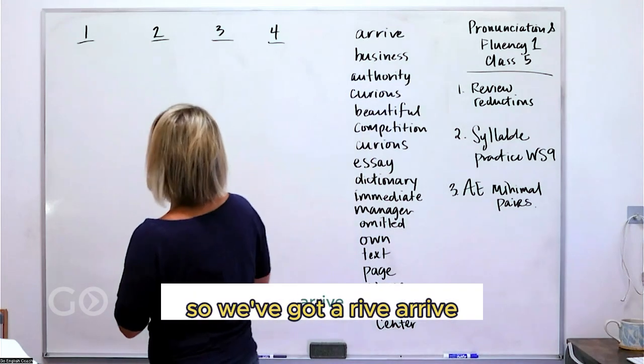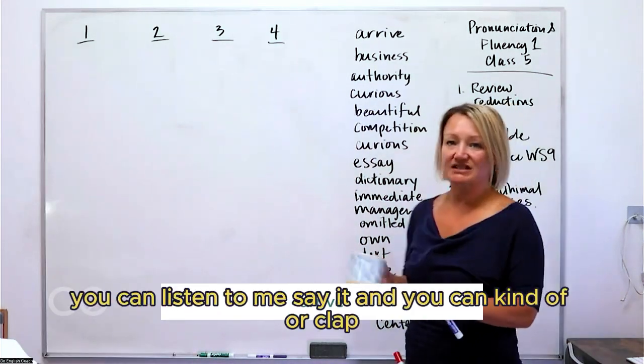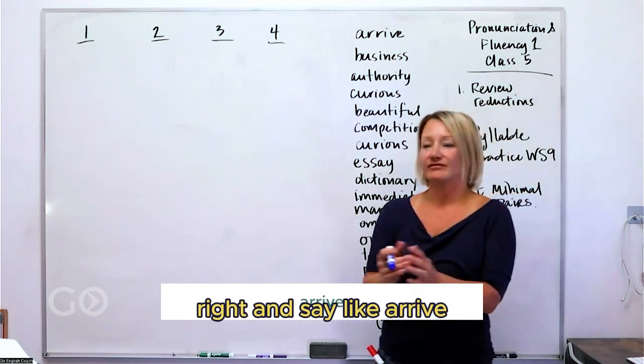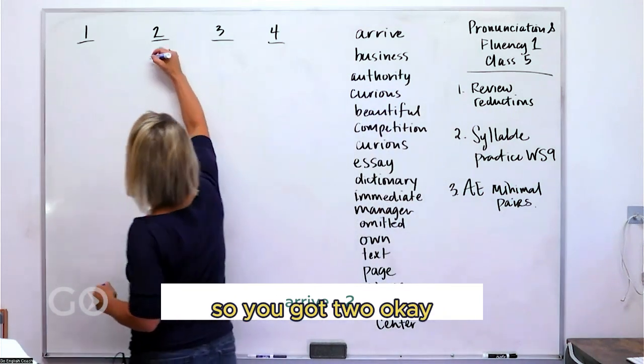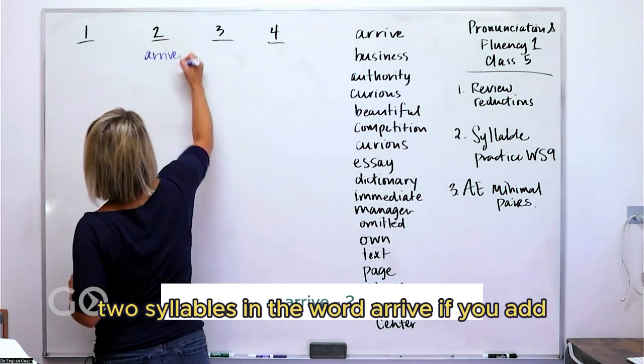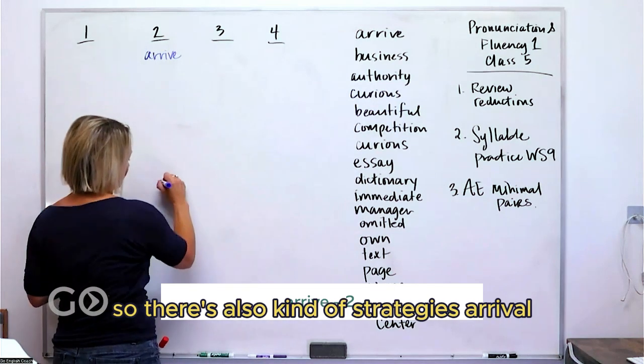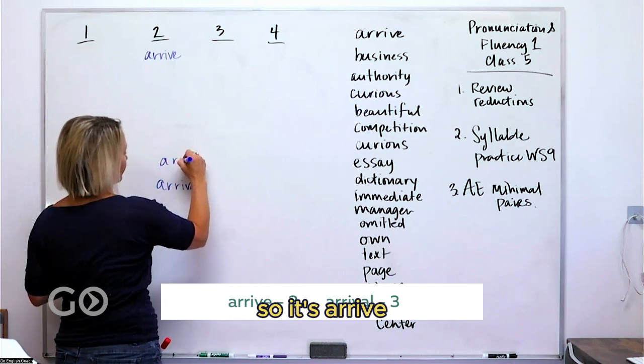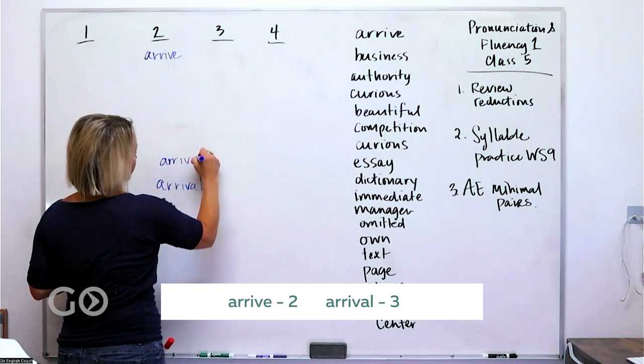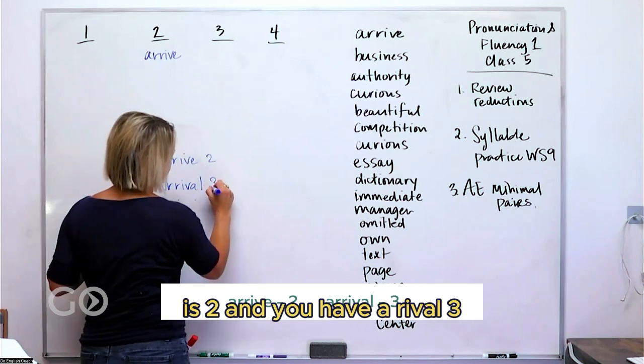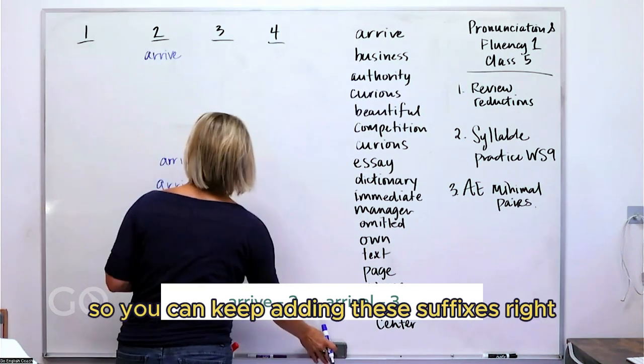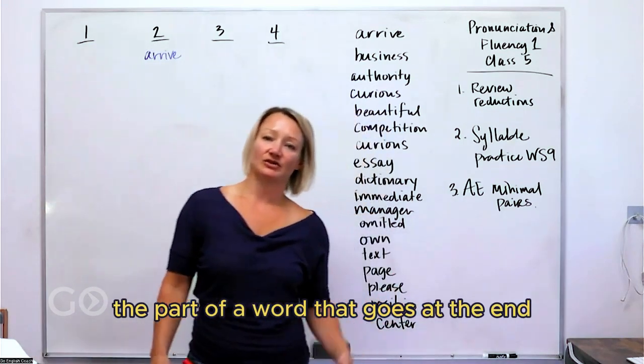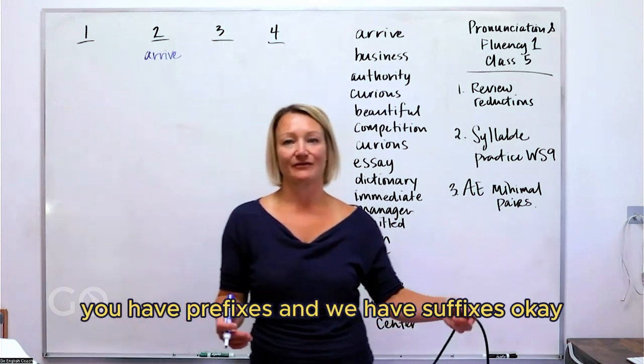So we've got arrive. You can listen to me say it and you can clap, right? You can say arrive. So we've got two syllables in the word arrive. If you add, so there's also some strategies, arrival. So it's arrive is two and then you have arrival, three. So you can keep adding these suffixes. A suffix is the part of a word that goes at the end. You have prefixes and we have suffixes.